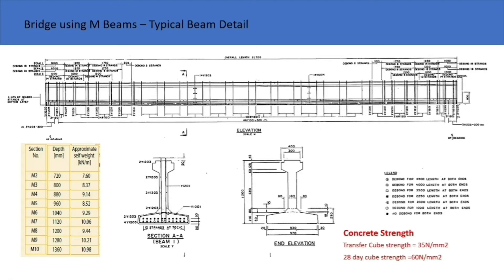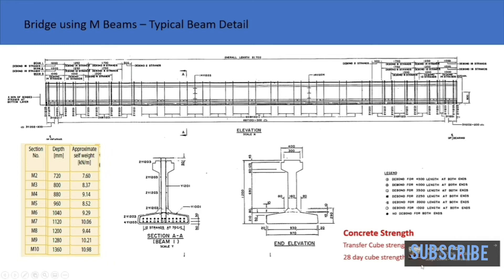Detailed drawings of M beam geometry, tendons, and reinforcements are shown in this slide. From this drawing, we can see how the pre-stressed tendons, shear links, and rebar for a 31.7 meter length M beam are arranged.